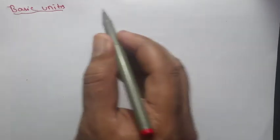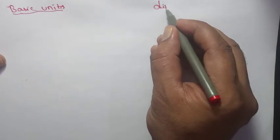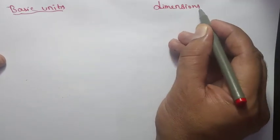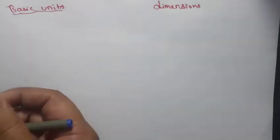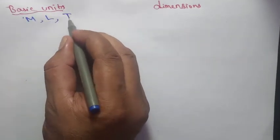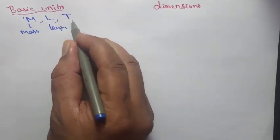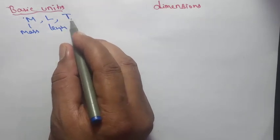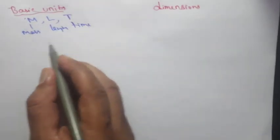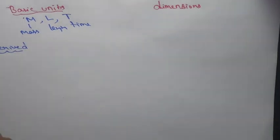Now, our basic units and dimensions. Basic units: M for mass, L for length, T for time. Now let us see derived units and then dimensions, which is our important chapter.